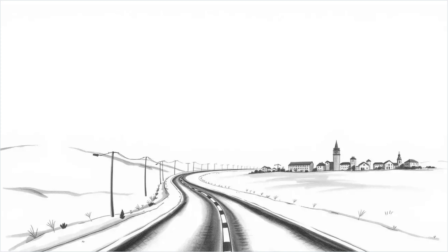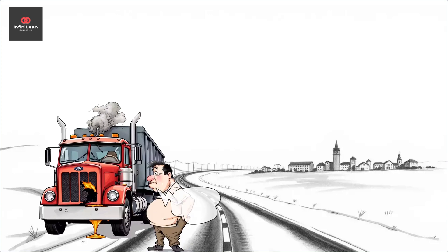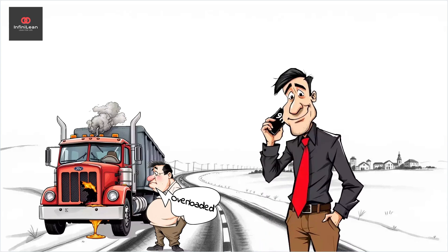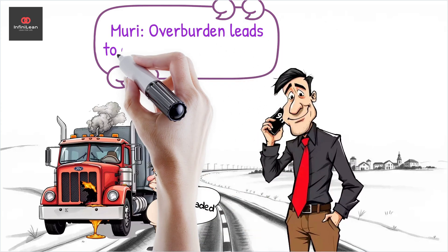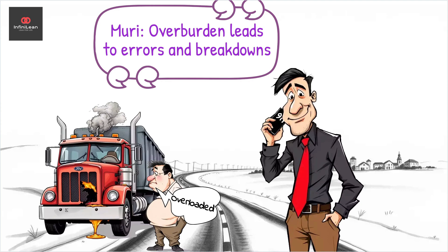Finally, Muri, or overburden, refers to the unnecessary strenuous demands placed on workers and equipment. When people or machines are pushed beyond their limits, the risk of errors and breakdowns significantly increases. This results in wasted effort and time and can lead to increased wear and tear. Reducing Muri involves re-evaluating workloads and ensuring that tasks are balanced and feasible, safeguarding human and mechanical resources.